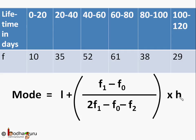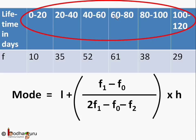The modal class, which has the most frequency, is 60 to 80, because it has the highest frequency of 61. L equals 60, the lower limit of the modal class. H equals the class size, which is 20.